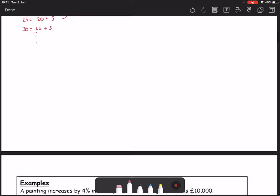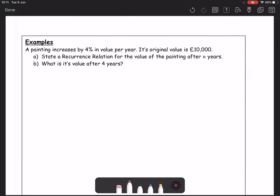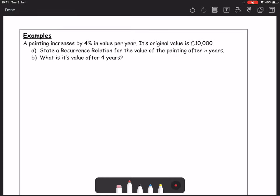Let's look at an example. And this example is deliberately similar to something that you would have found in National 5. A painting increases by 4% in value per year. Its original value is £10,000. State the recurrence relation for the value of the painting after n years.